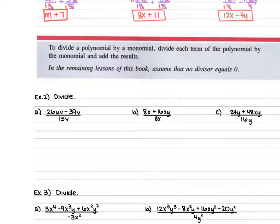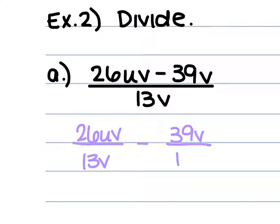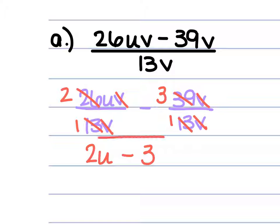In Example 2, we're dealing with the same types of problems, except now we have a variable in our denominator. For a, we have 26uv minus 39v, all over 13v. We're going to break this up to be 26uv over 13v minus 39v over 13v. The 13 goes into 26 twice, and the v's cancel, leaving 2u. The 13 goes into 39 three times, and the v's cancel. So it's 2u minus 3.